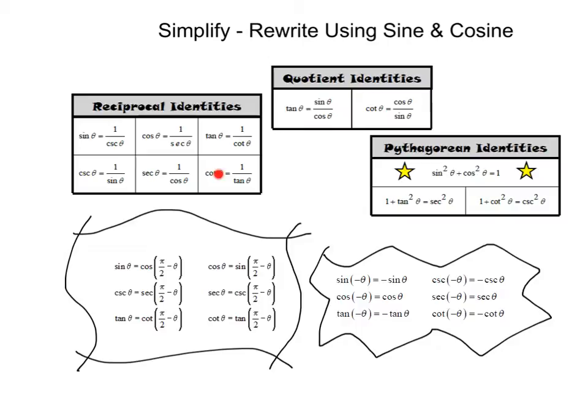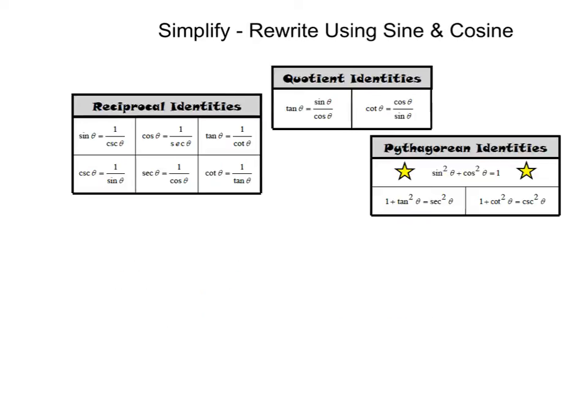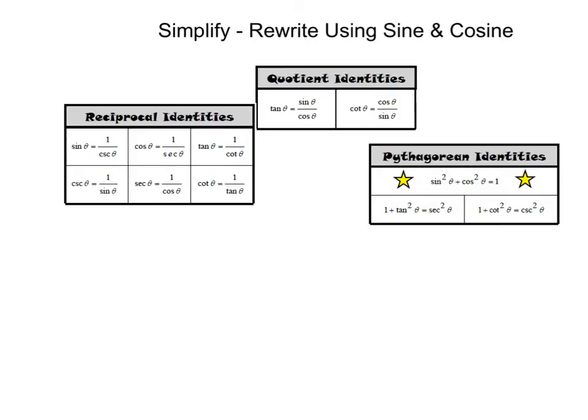For right now I'm going to keep just these in mind. I don't want you to forget about the cofunction and even odd, but we won't use those quite as often. So for now, let's go ahead and get rid of our friends, the cofunctions and the even odd, focusing on our reciprocal, quotient, and Pythagorean identities.